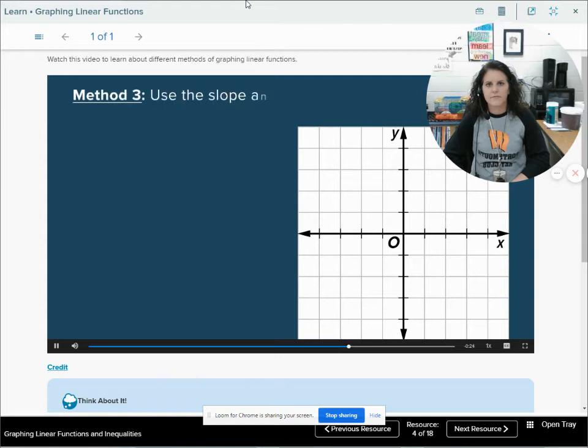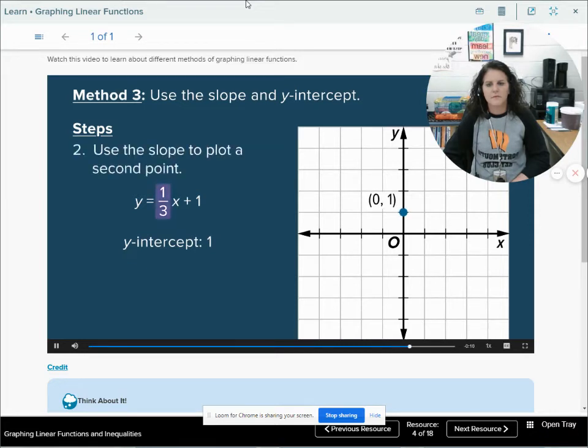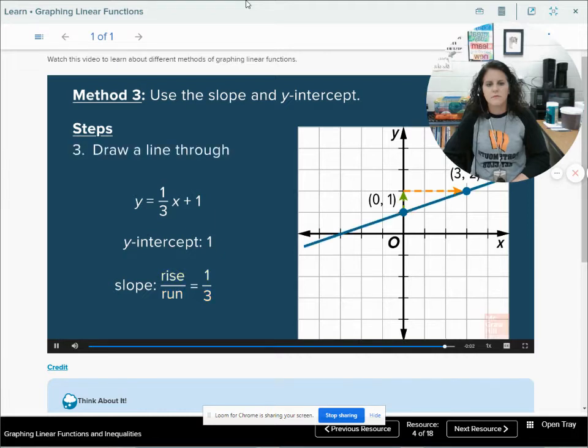Finally, you can graph a linear function by using the slope and y-intercept. Use the slope-intercept form of the equation to find the y-intercept. Then use the slope to move from the y-intercept to a second point on the graph. Then draw a line through the two points.